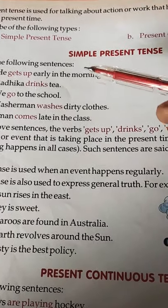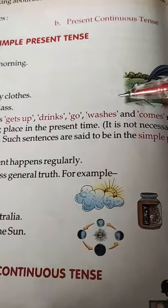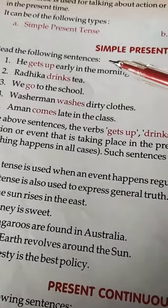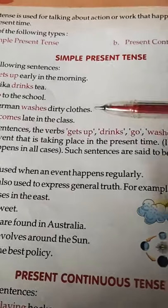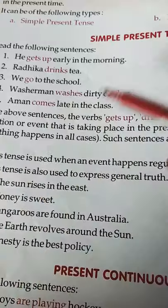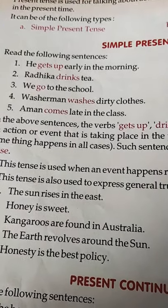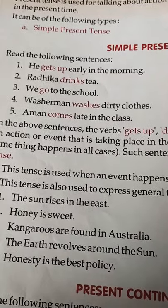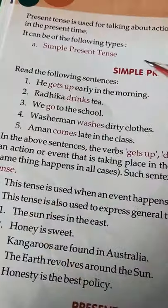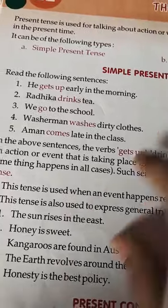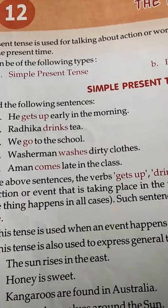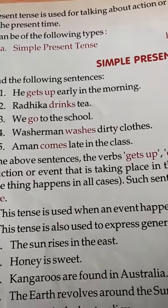In all the above sentences, the verbs — gets up, drinks, go, washes, comes — refer to an action or event that is taking place in the present time. Is mein jo bhi verbs diye gaye hain, ye sab bilkul aaj ki baat bata rahe hain, jo aaj hua hai, use bata rahe hain. Such sentences are said to be simple present tense. Ye sentences simple present tense hote hain, jo hamein abhi ki baat, aaj ki baat batate hain, jo hamari habit batate hain.